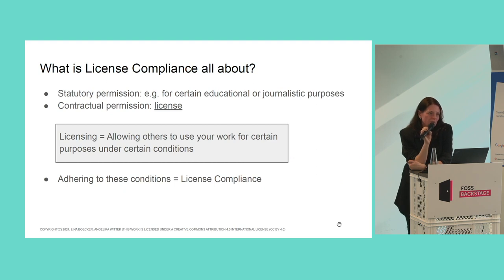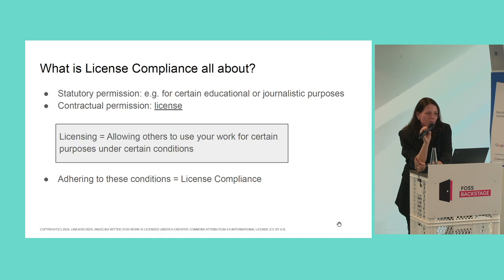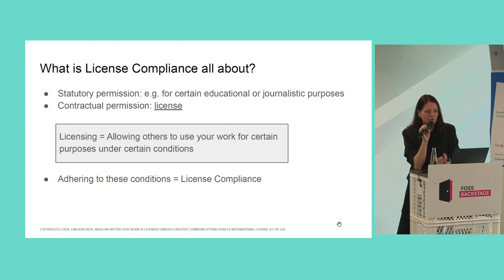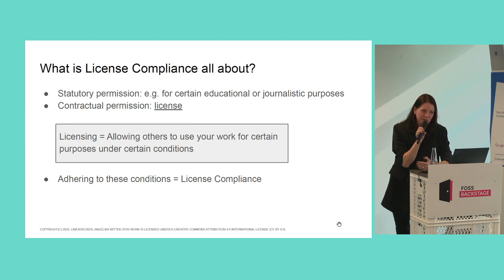Whenever you use software not written by yourself, you have to obtain a license — you need to get the right to use it. You can get that either through statutory law, which covers a very narrow set of rights, or through a contract called a license. When you find out the conditions under which you get the license and you comply with them, that's called license compliance.